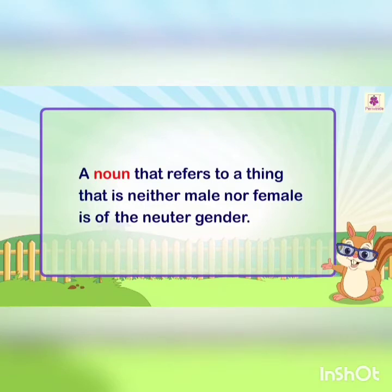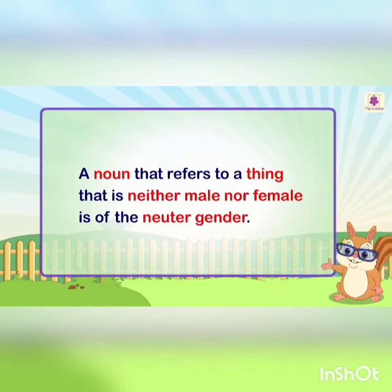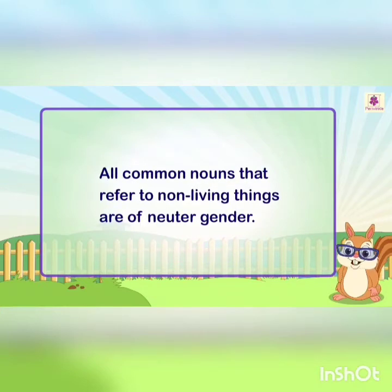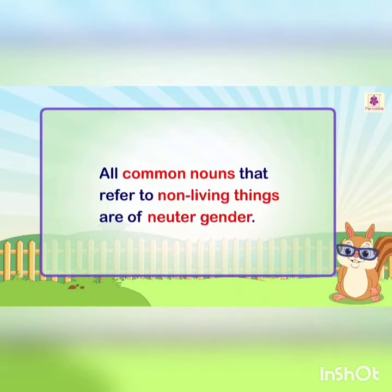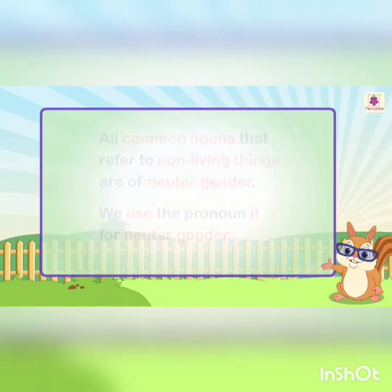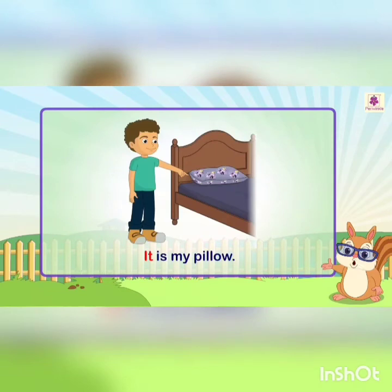A noun that refers to a thing that is neither male nor female is of the neuter gender. For example: 'The pillow is soft.' Remember, all common nouns that refer to non-living things are of neuter gender. We use the pronoun 'it' for neuter gender. For example: 'It is my pillow.'